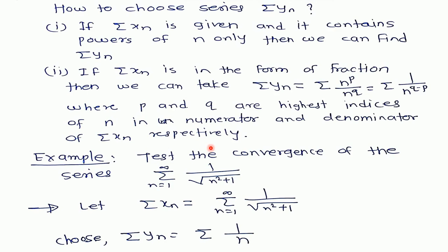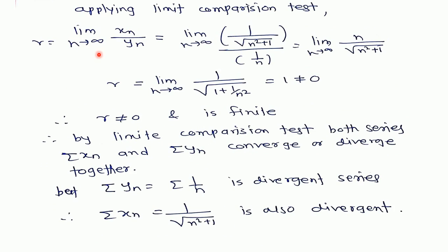For example, consider the series xn = summation from n=1 to infinity of 1/√(n²+1). We choose yn = 1/n, using the formula. The highest power of n in the numerator is zero (only a constant term, no n), and the highest power in the denominator is one (since √(n²) = n^1). Therefore we choose 1/n^(1−0) = 1/n.